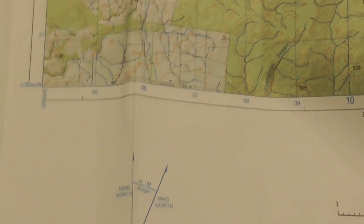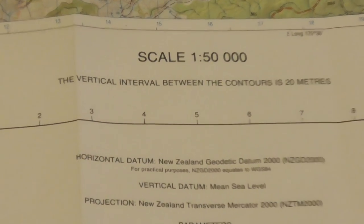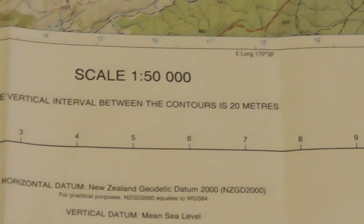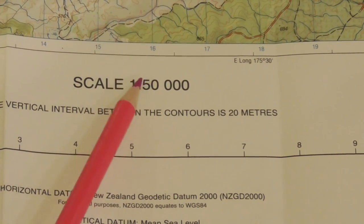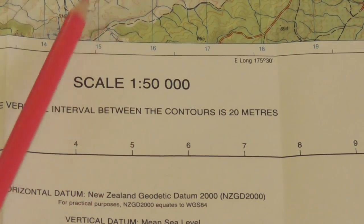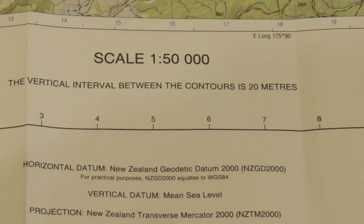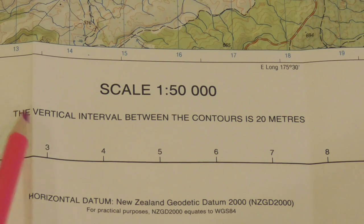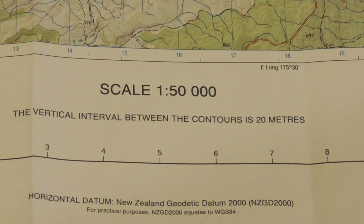Further along the marginal information, we have the scale of the actual map itself. As we talked about before, it's a 1-in-50,000 scale, so for every one centimetre on the map there are 50,000 centimetres on the ground — basically 500 metres on the ground for every one centimetre on the map. The vertical interval between the contours is 20 metres — that's very important information.